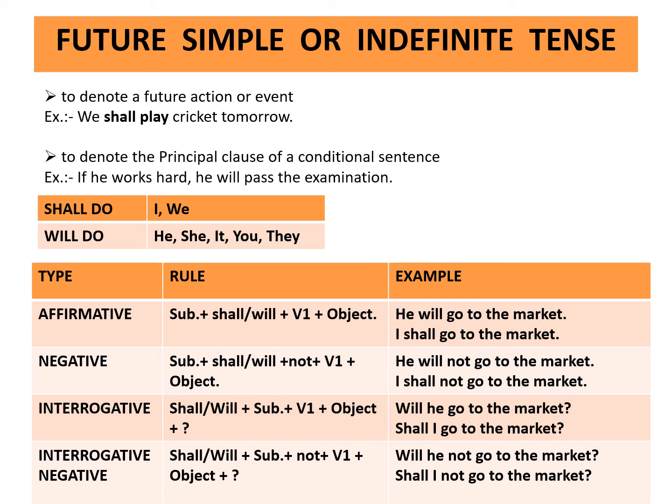Interrogative negative rule: shall or will plus subject plus not plus first form of the verb plus object plus question mark. Example: Will he not go to the market? Shall I not go to the market?